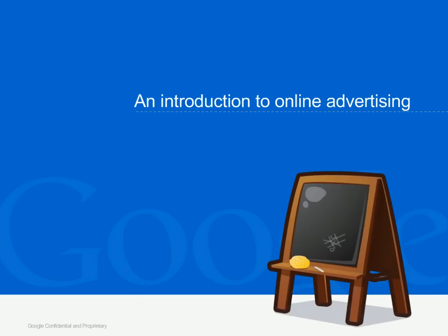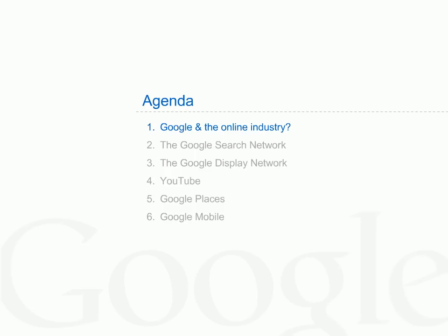Welcome to an introduction to online advertising. This class has been created to give you an overview of Google's online advertising platform. During this session, the following topics will be covered: who is Google and what place do we have in the online industry; what is the search network and how does it work; what is Google's display network; how can YouTube be used for advertising; what is Google Places; and what are the advertising options on Google Mobile?